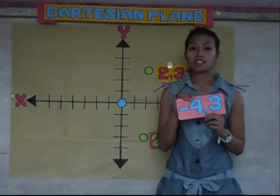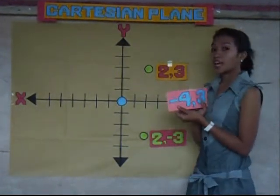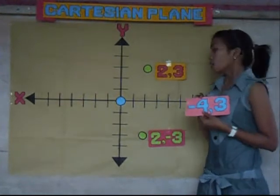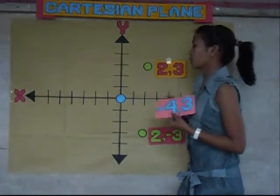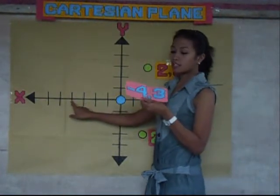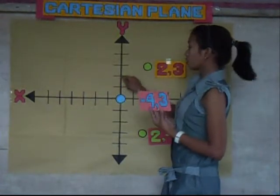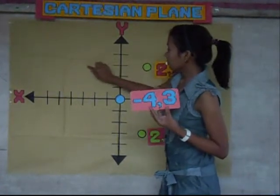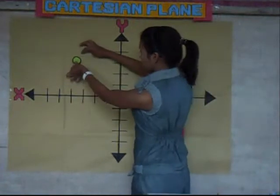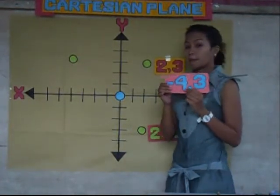The third example is (−4, 3). Since x is negative and y is positive, this ordered pair is in the second quadrant. Since x is negative 4, we count 4 from the origin going to the left — 1, 2, 3, 4. Since y is positive 3, we count 3 going up — 1, 2, 3. So this ordered pair is plotted here, which we call (−4, 3).